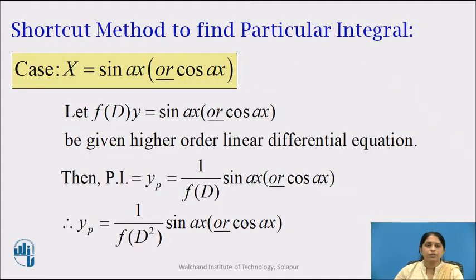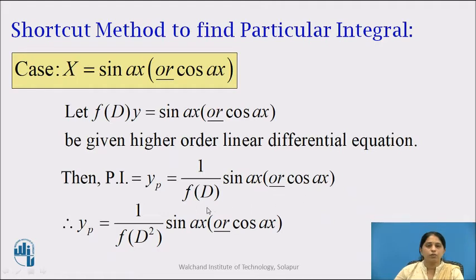In the previous videos, we have seen the shortcut method to find the particular integral where the capital X is sin x or cos x. If the capital X is sin x or cos x, to find yp we rewrite it as 1 upon f(D) into sin x or cos x, where f(D) will be rearranged so that it is in terms of f(D²).